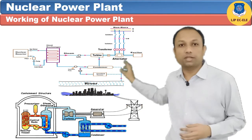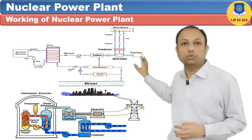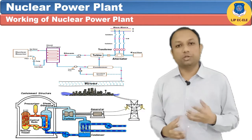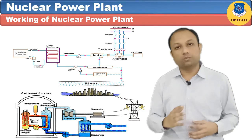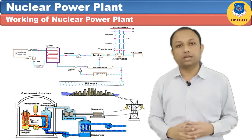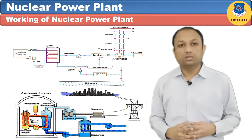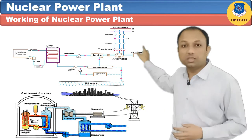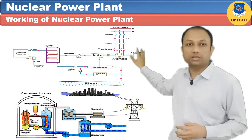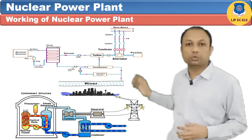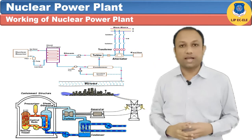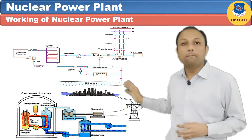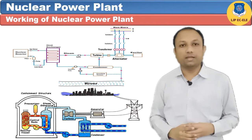Through the heat exchanger, water is circulated. Due to the indirect contact between the coolant and the water, the water absorbs the heat of the coolant and is converted into steam. The steam produced in the heat exchanger is then passed through the turbine, which converts the heat energy into mechanical energy.